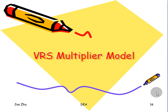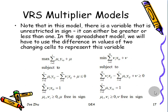Now let's take a look at the VRS Multiplier Model. The previous CRS Enveloped Model is equivalent to the CRS Multiplier Model. We've talked about the VRS Enveloped Model, so what is the equivalent model to that?